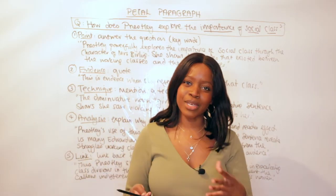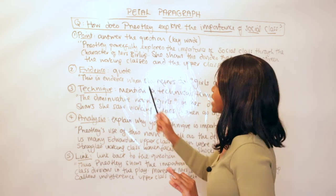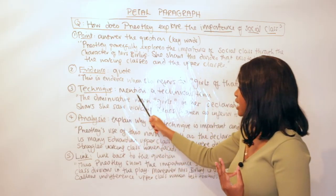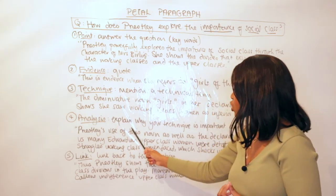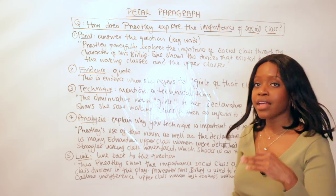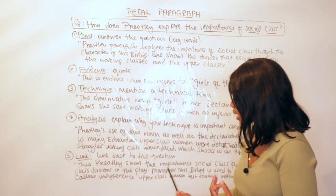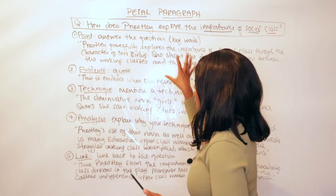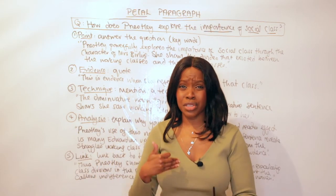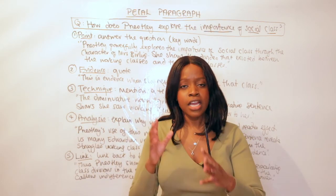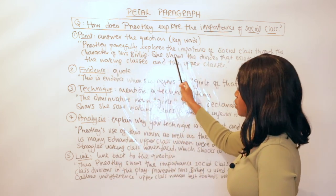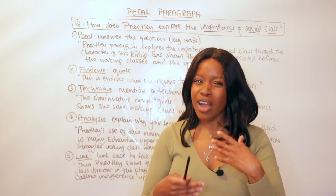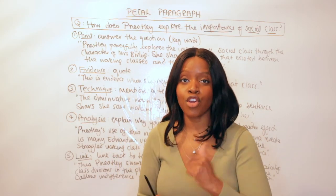Let's quickly recap: P = Point — answer the question directly. E = Evidence — quote directly from the text. T = Technique — mention a technical term within your quote. A = Analysis — explain why your technique is important and the reader or audience effect. L = Link — link back to the question. That's a PETAL paragraph — it's quite straightforward once you understand it. You can substitute this working example from 'An Inspector Calls' for any language extract. Watch the video again to review each step and then apply it in your own writing.